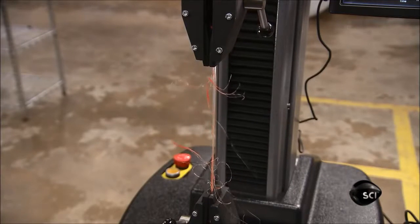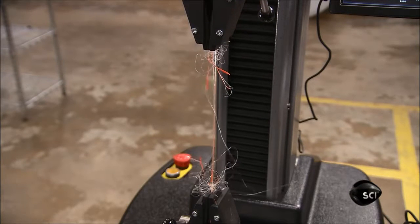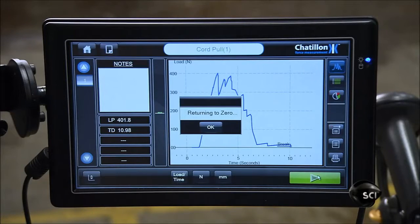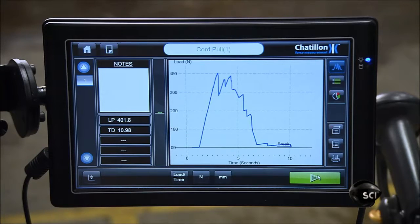The tester measures the peak force required to pull the cord apart, and the results are displayed instantly on the control screen.